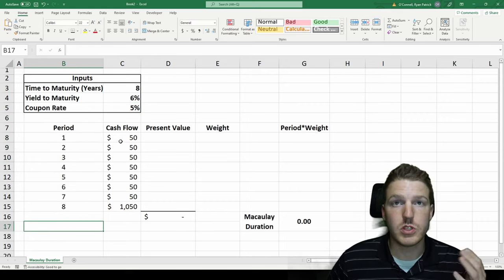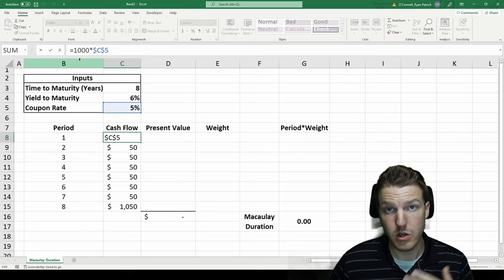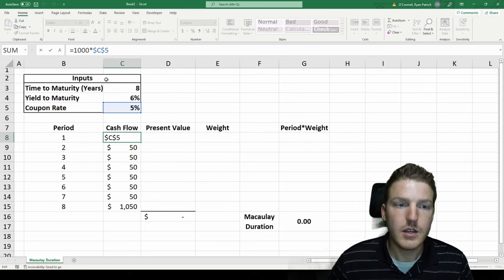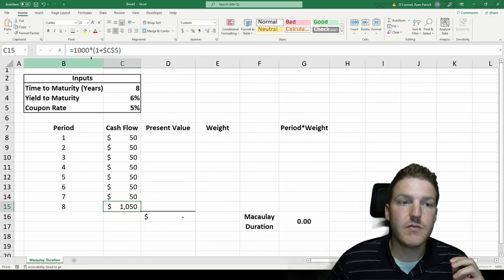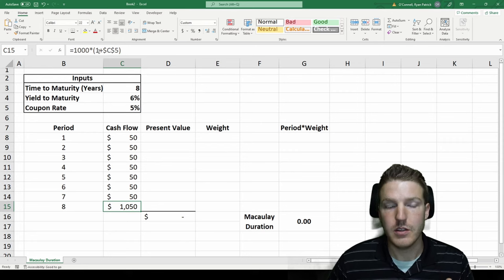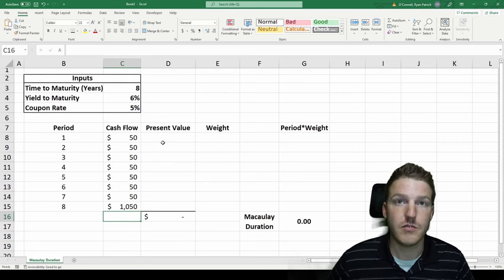So we can see we have periods one through eight, and in each of the first seven periods, you'll be receiving $50 if you hold this bond, which is just the $1,000 notional value of the bond times 5%. The last period, you'll receive the $1,000 notional value plus the 5% interest, so you'll get $1,050.